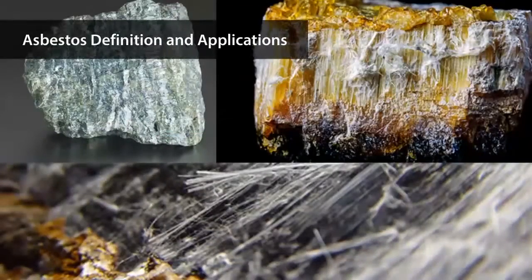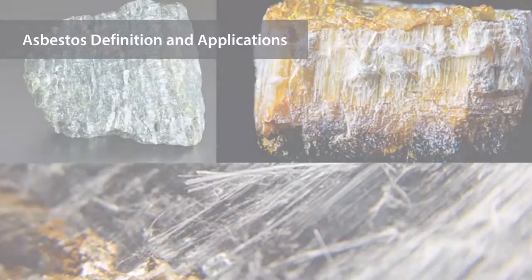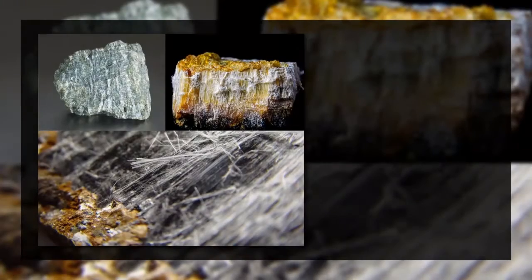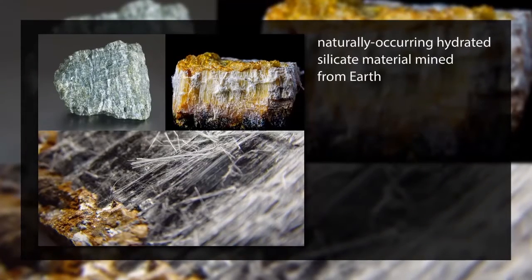So what is asbestos? It is a naturally occurring hydrated silicate material mined from the earth.